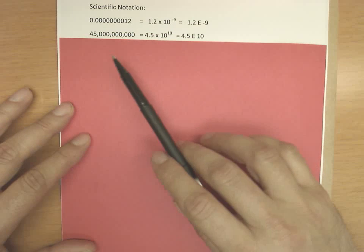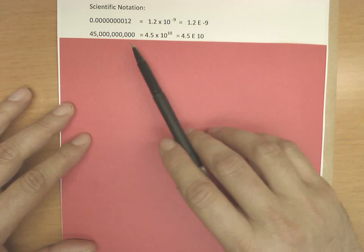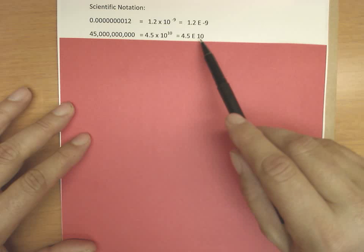The second number I have here is very large, 45 million—4.5 times 10 to the ninth, actually 45 billion. 4.5 times 10 to the tenth power, and your calculator will be 4.5e to the tenth.